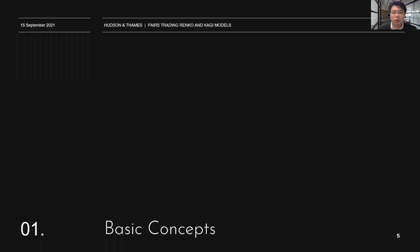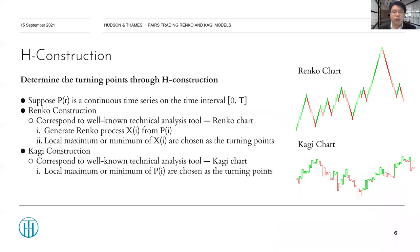Now let's go to the basic concepts. To implement this approach, the first thing we must do is determine the turning points. The paper refers to this decision process as edge construction. There are two types: the first is called Renko construction, and the second is called KG construction. They correspond to well-known technical analysis tools, the Renko chart and the KG chart.